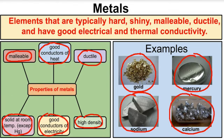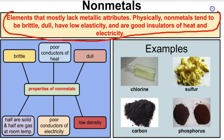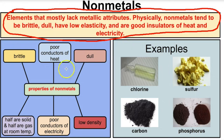Let's take a look at non-metals now. Non-metals are elements that mostly lack metallic attributes. Physically, they tend to be brittle, dull, have low elasticity, and are poor conductors of heat and electricity. Being a poor conductor of heat and electricity makes you a good insulator — so non-metals tend to be good insulators, whereas metals tend to be good conductors of heat and electricity.